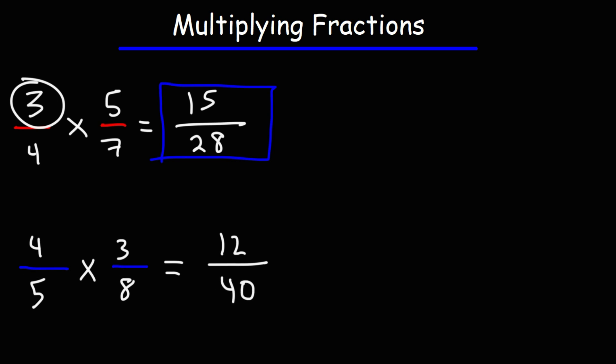So our answer is 12 over 40. But we can reduce this fraction. Notice that both the 12 and the 40 are even numbers. So what we can do is divide both numbers by 2. Half of 12 is 6. Half of 40 is 20.